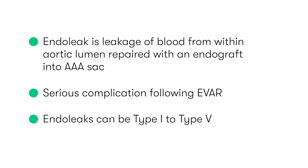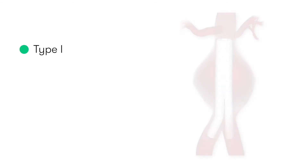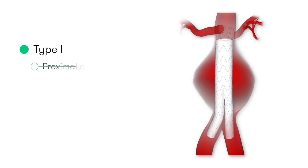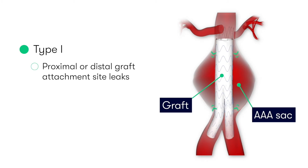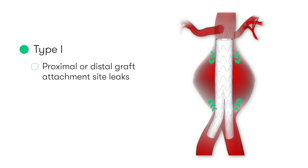Endoleaks can be described as type 1 to type 5. Type 1 endoleaks are when we have leakage at either the distal or proximal graft attachment site, and understandably, this is an emergency.